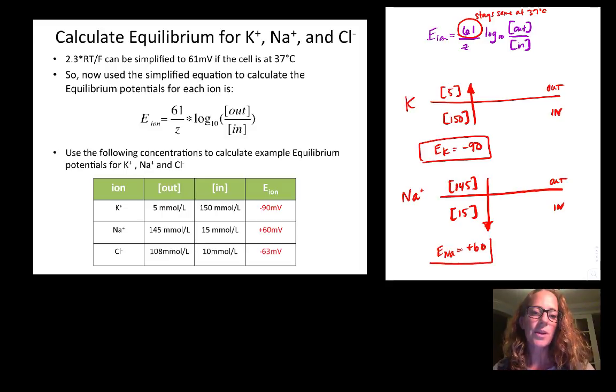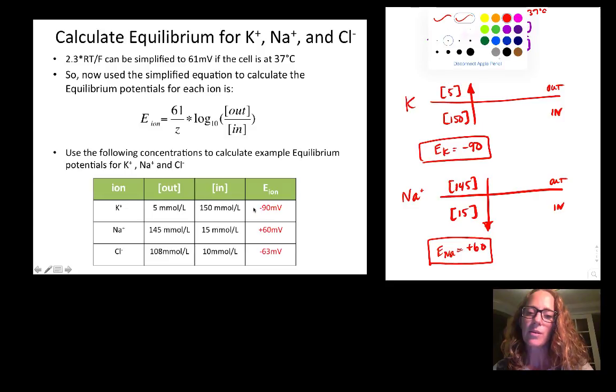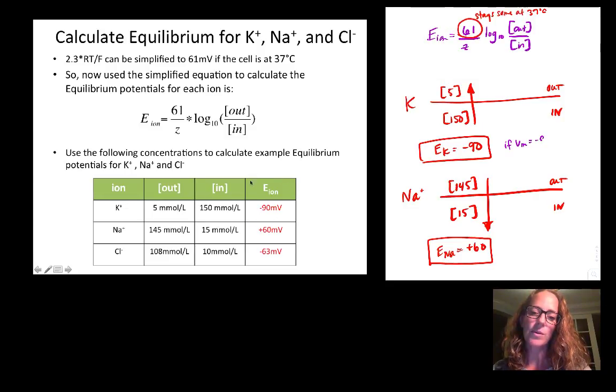If we just look at sodium and potassium now, the equilibrium potential for potassium is minus 90. That means that if the voltage of the membrane is at minus 90, then potassium will have no net movement or zero movement. It'll be equally balanced across the membrane. If the voltage of the membrane is at positive 60, then sodium will be equally balanced and will have no net movement across the membrane.